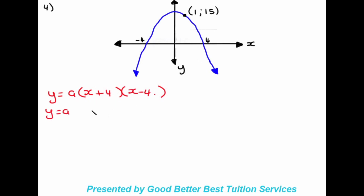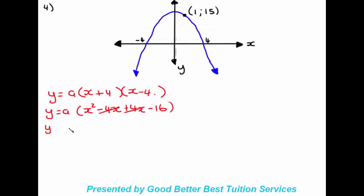Expanding the two brackets: x times x gives x squared, x times negative four gives negative four x, four times x gives positive four x, and positive four times negative four gives negative sixteen. The positive four x and negative four x cancel, leaving y equals a times x squared minus sixteen. We now have a as our only unknown, and we'll substitute in the point given to us, which is one and fifteen.